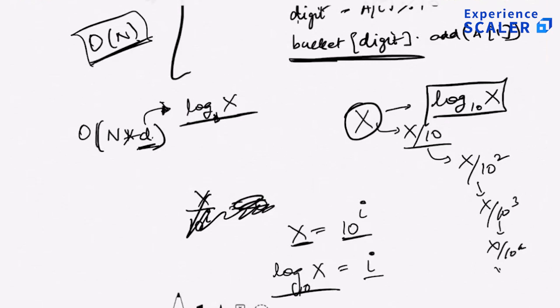Bucket sort is more generic — its fundamental idea is that you can create any sort of bucket you want: all numbers from 1 to 100, 100 to 1000, 2000 to 3000. You can create any bucket as long as it covers all ranges, and every number in bucket one is smaller than every number in bucket two. Bucketize the numbers, sort them separately within each bucket, then append — that's bucket sort. Radix sort uses bucket sort by this type of bucketing across all digit positions instead of just MSB or LSB.